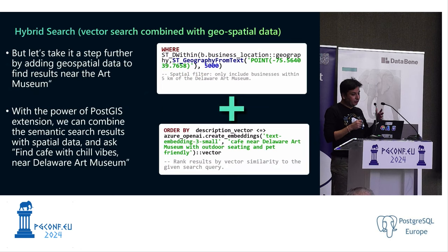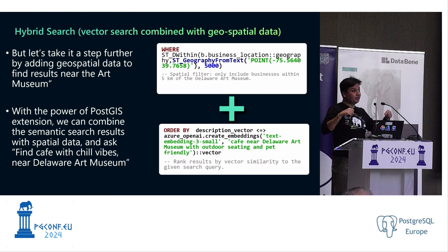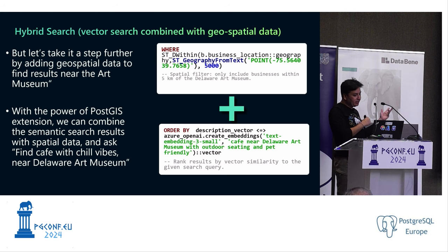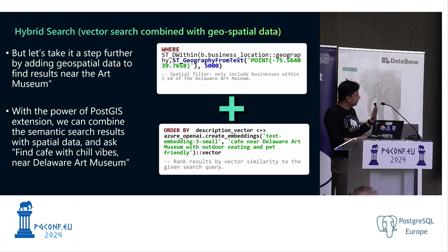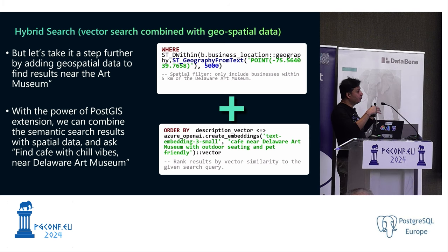Now that I have vector data, I want to combine it with a hybrid search. I have cafes with chill vibes — good — but I also need to find something near me, which means I need geospatial data. Luckily the Yelp dataset had geospatial coordinates, which I imported into my table. Now my query passes both the ORDER BY semantic context and the coordinates, saying 'cafe near Delaware Art Museum with outdoor seating and pet friendly,' providing more nuanced context to my search.